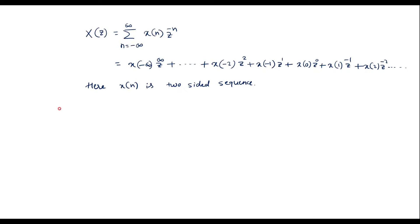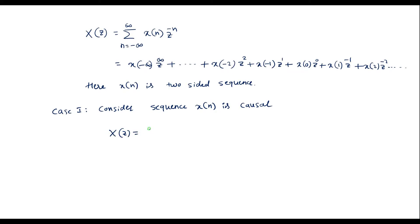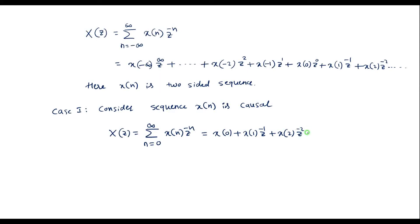Case 1: Consider X(n) is a causal sequence. In that case we can represent X(Z) as the summation from n = 0 to infinity, because for a causal sequence X(n) = 0 for n less than 0. Expanding this summation: X(Z) = X(0) + X(1)·Z⁻¹ + X(2)·Z⁻² + and so on.